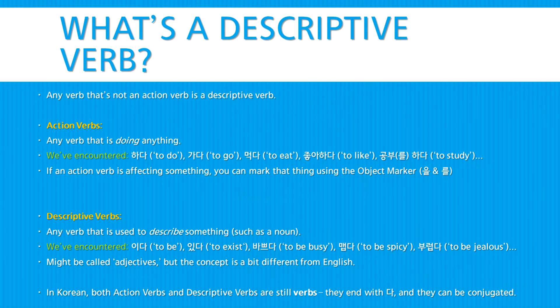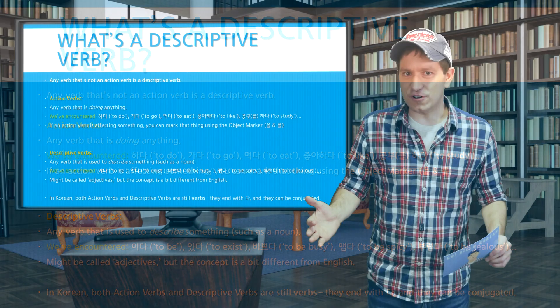So here are a few examples of action verbs we've seen: 하다, to do; 가다, to go; 먹다, to eat; 좋아하다, to like; 공부하다, to study. And if an action verb is affecting something, you can mark that thing it's affecting using the object marker.